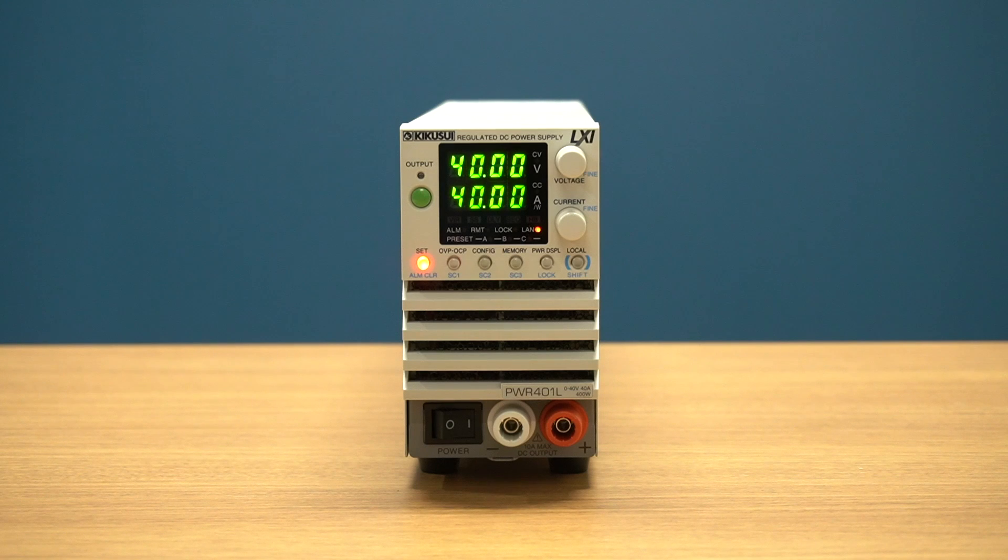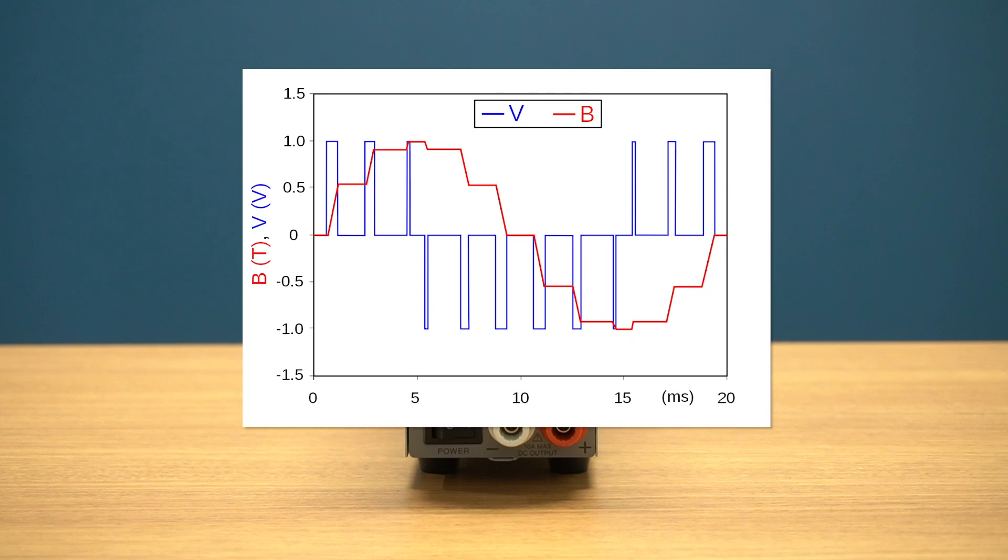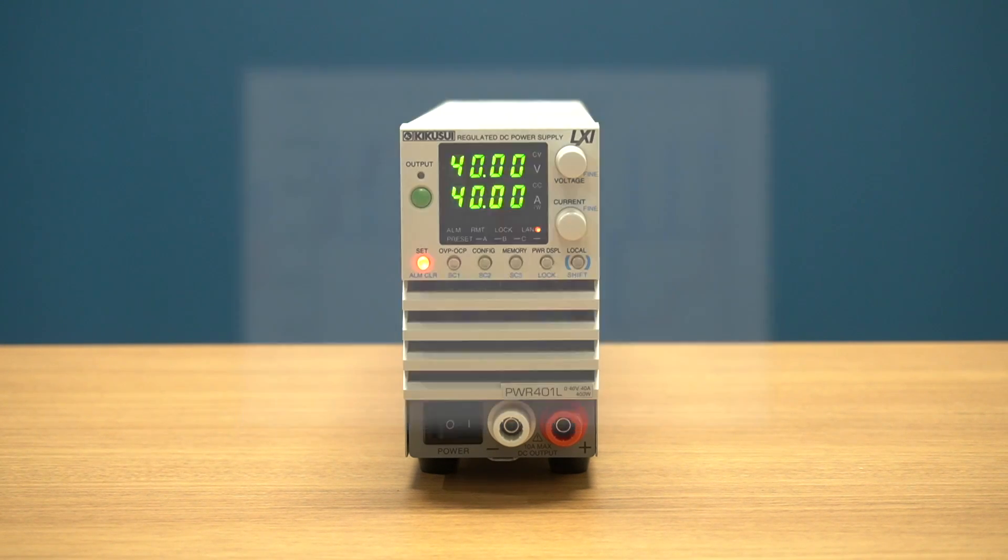On the other hand, switching DC power supplies regulate output voltage through a process known as pulse width modulation. This process generates some high frequency noise, but enables the power supply to be highly power efficient with a small form factor.